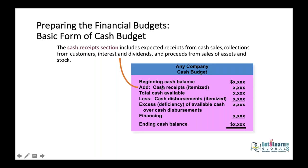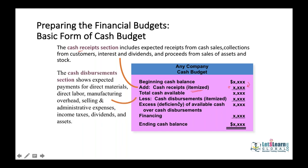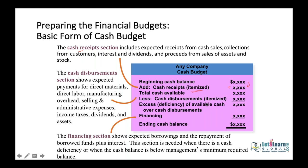The cash budget is prepared in three sections. The receipts section is added to the beginning balance, and remember it must be itemized, not just a grand total. Disbursements are also itemized — cash purchases, payment to suppliers, labor, overheads, etc. If there is a deficiency, you may have to borrow money as a financing inflow. If there is a surplus amount, you will repay the loan.